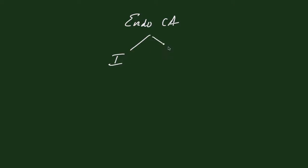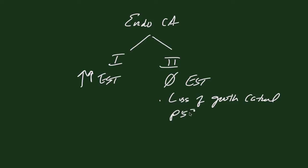Type 1 is all about too much estrogen. Type 2 has nothing to do with estrogen. Type 2 has everything to do with loss of growth control characterized by such things as P53 mutations.